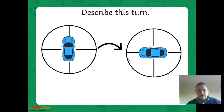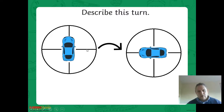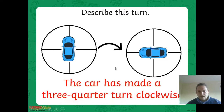Next one - describe this turn. This time the arrow's going in this direction, and we know that is clockwise. How far has the car turned? Well, if it's turned in this direction, it started off here - that's a quarter turn, a half turn, a three-quarter turn. So I would say that has made a three-quarter turn in a clockwise direction - three-quarters clockwise.